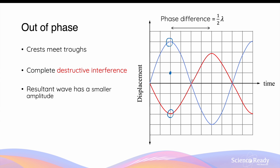Here, the two waves are in the equilibrium position — that is with no displacement — at the same time, so the resultant wave will also pass through equilibrium at this time point. When you look at the crest of the red wave and the trough of the blue wave, if we do minus four plus three, this gives a resultant amplitude of minus one for the final wave. If we do that for all of the time points and join the dots together, we'll have this black resultant wave of a smaller amplitude. When the waves are out of phase and undergo destructive interference, the resultant wave has a smaller amplitude and also less energy.